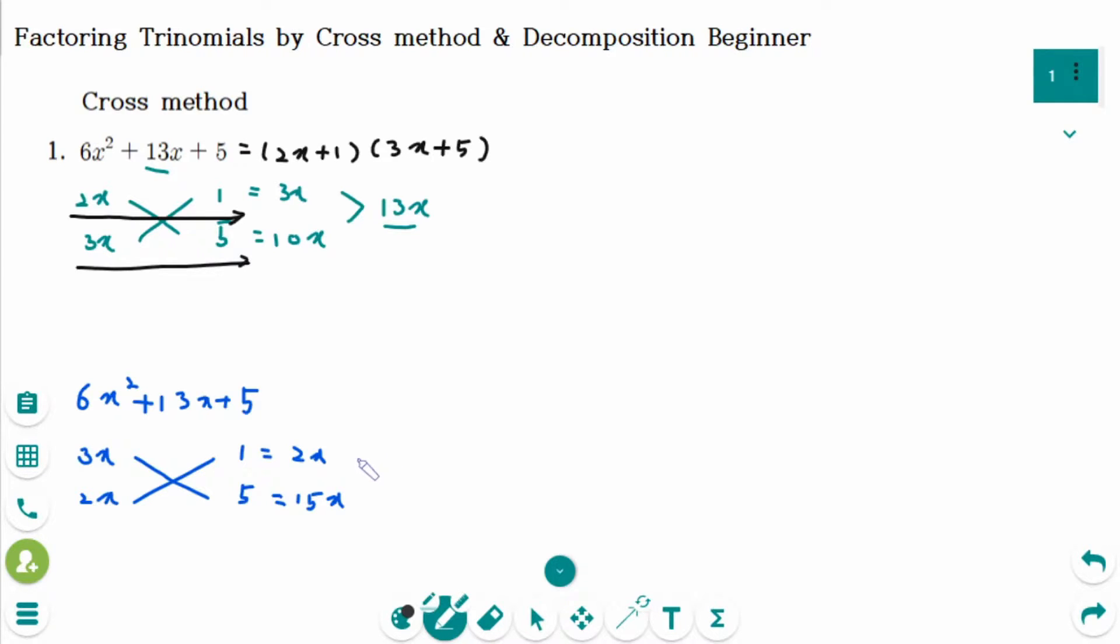So combined together, you have 17x. This is not the middle term. It's not working. If you want to use the cross method, every time you have to find out the order of the two numbers in the first and last terms.